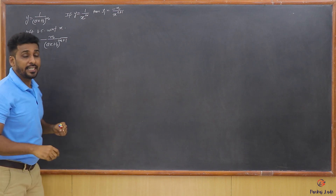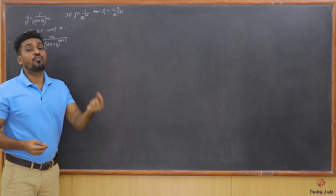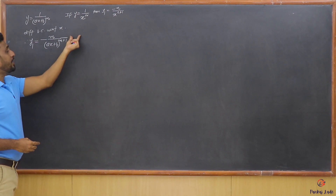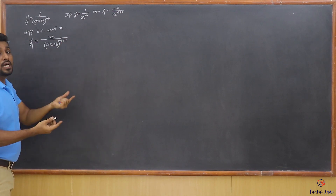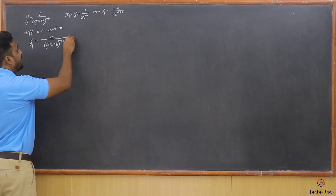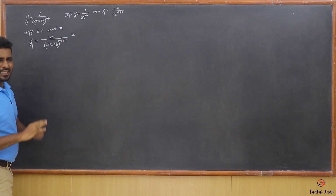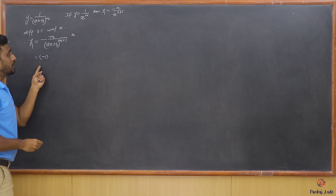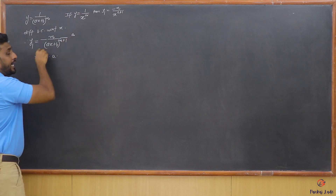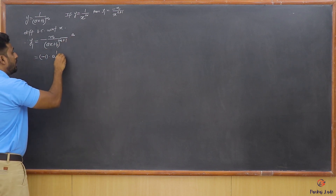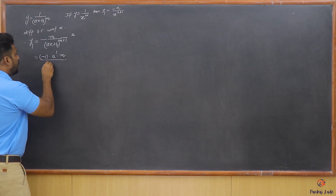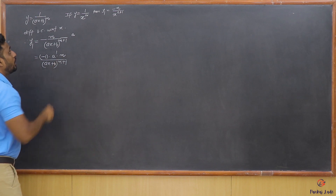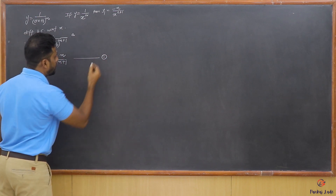But it is not x — it is ax+b, a function of x in place of x. So you need to again differentiate the function of x. The derivative of ax+b is a. So we can write this as (-1) · a^1 · m / (ax+b)^(m+1). Let's call this the first relation.